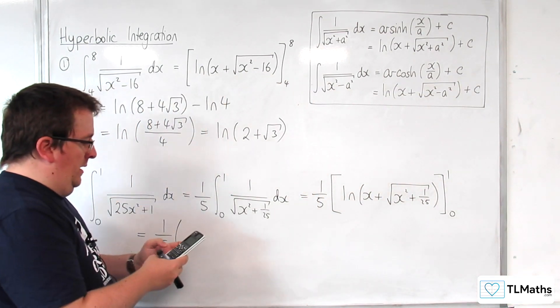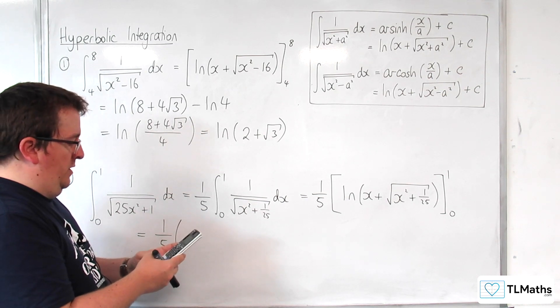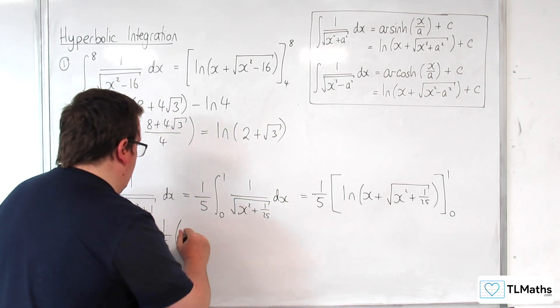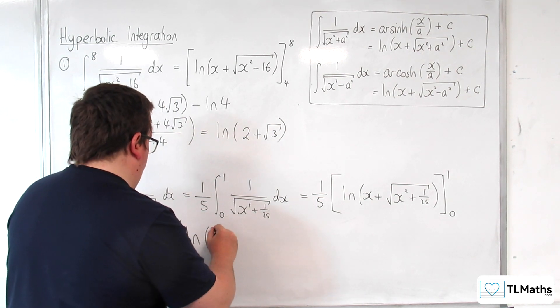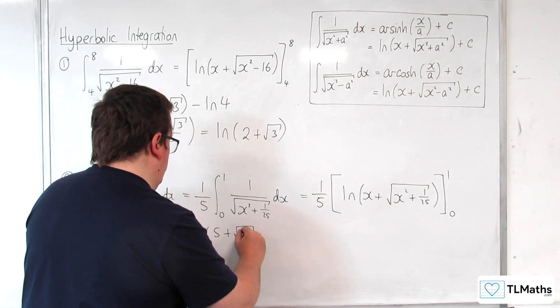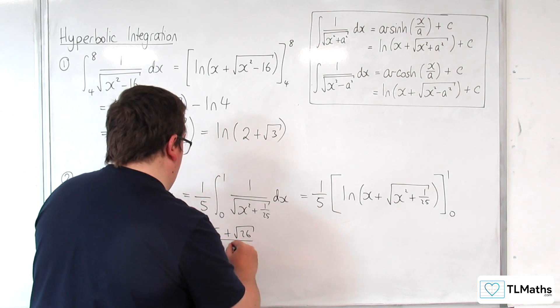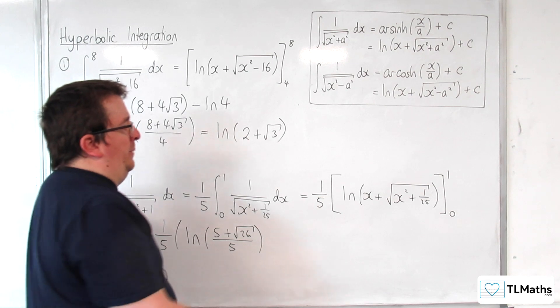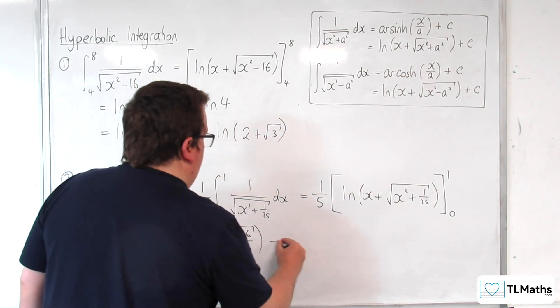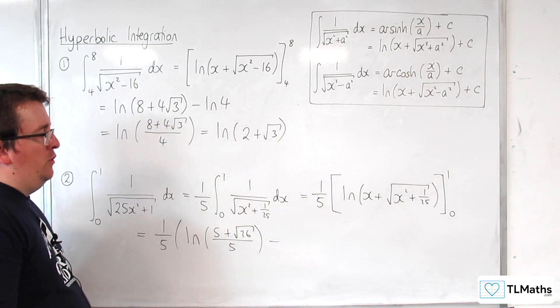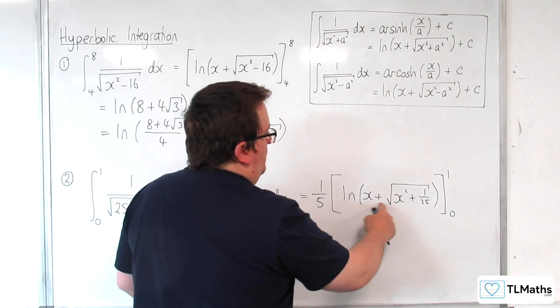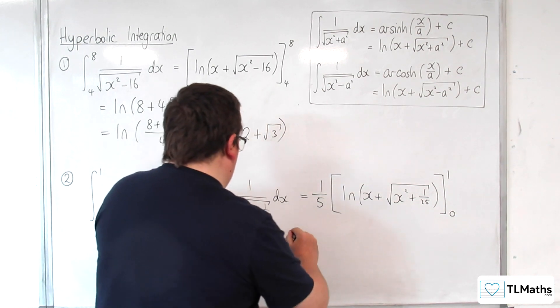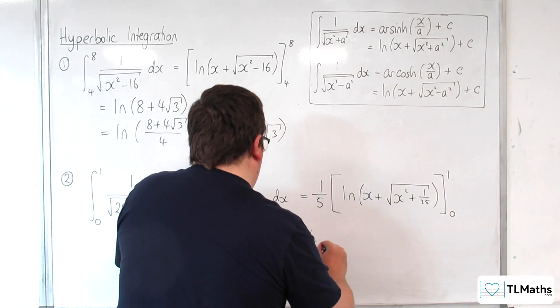Substituting 1, we get 1 plus the square root of 1 plus 1 over 25, which gives us the natural log of 5 plus root 26 over 5. Then substituting 0, we get 0 plus the square root of 1 over 25, which is 1 over 5, so log of 1 over 5.